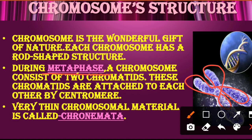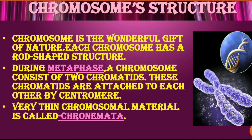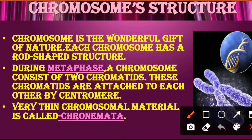During metaphase, each chromosome consists of two chromatids. These chromatids are attached to each other by the centromere. So during the metaphase stage of the cell cycle, two chromatids are formed in a chromosome. The arms attached from the centromere are called chromatids, and these sister chromatids remain attached with the help of the centromere during metaphase.